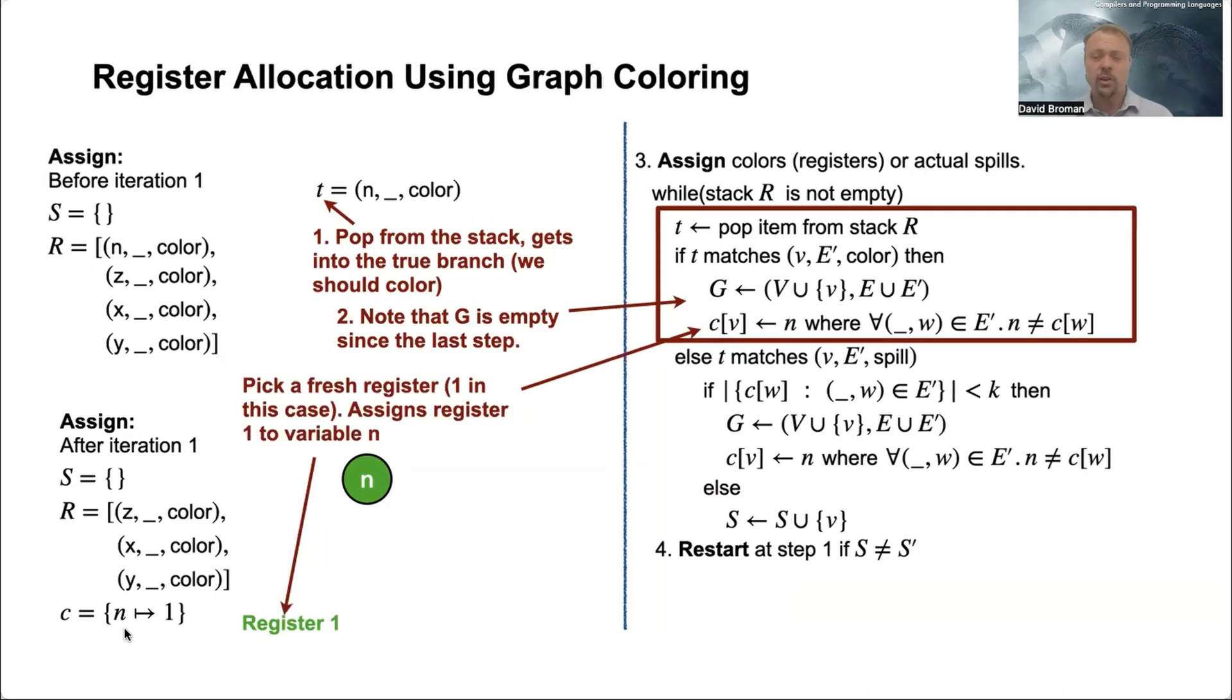You don't have to use colors - you just use natural numbers like here. So it says n equals 1, so then we give register 1 here. So what is going on on this line? Well, here we do the assignment. And we pick one n where this should hold.